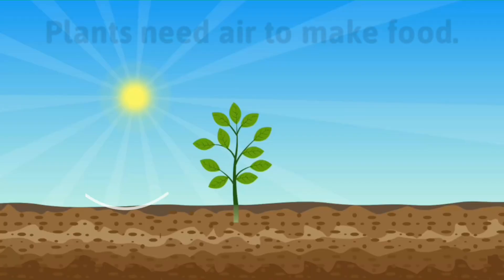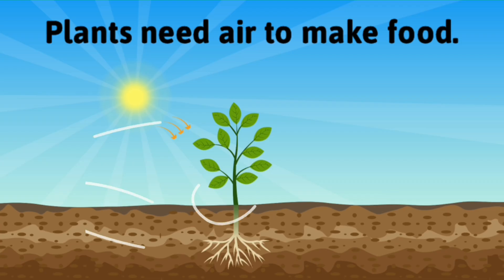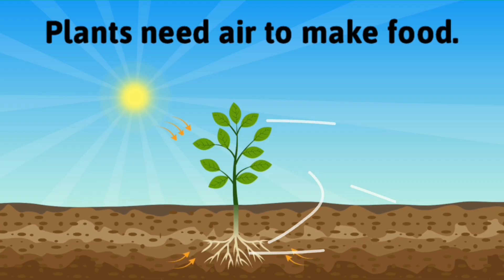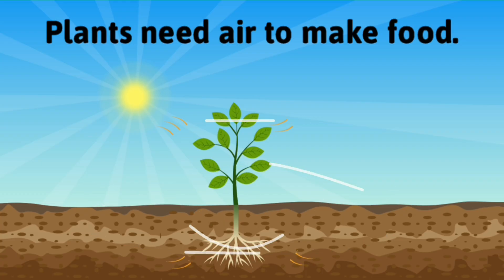Plants use air to make their food. In addition to sunlight and water, plants utilize carbon dioxide to make their food and release oxygen in the process.